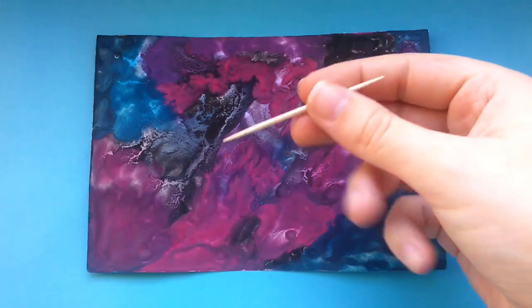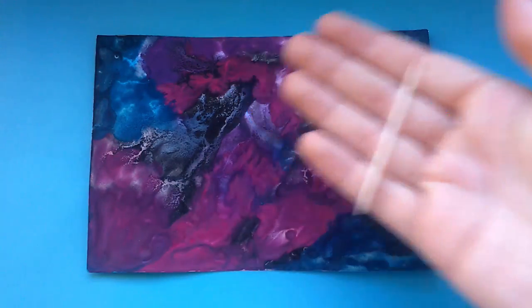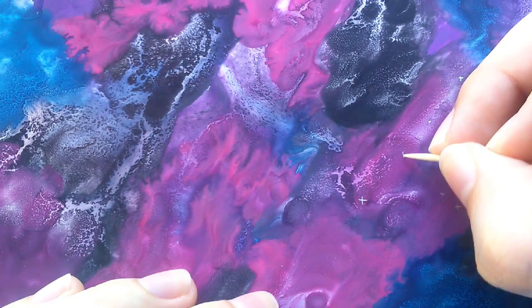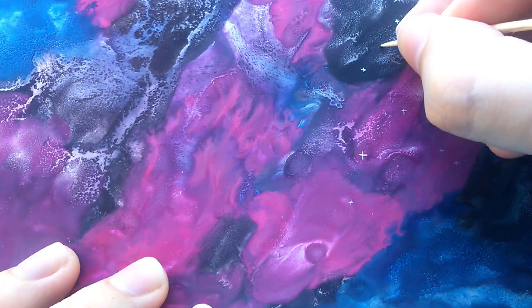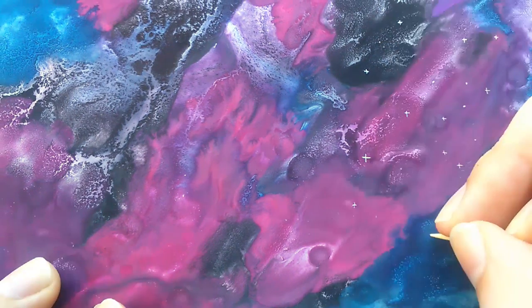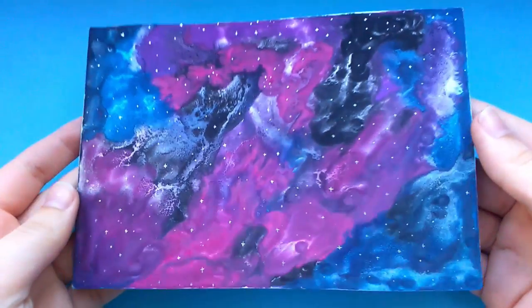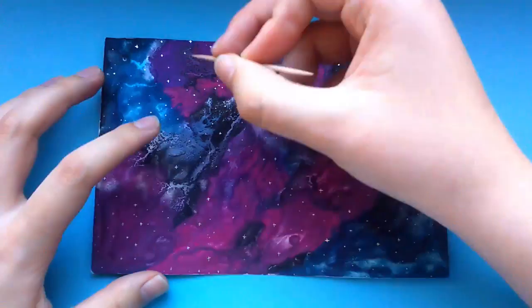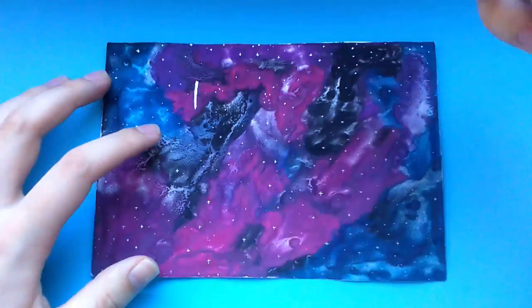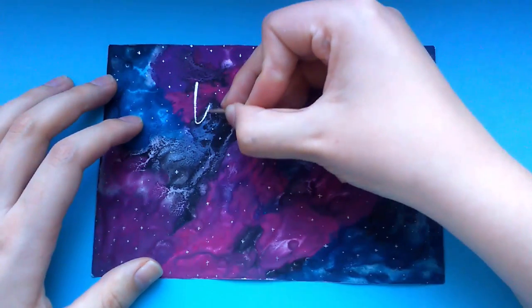To scratch off the paint, use a toothpick or a bamboo skewer and draw whatever you like. As I'm creating a galaxy, I'm making tiny stars all over the sheet. And because it still looked a bit boring, I scratched in some swirls as well.